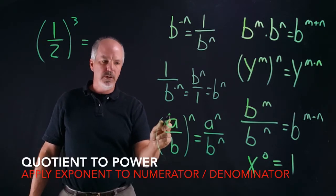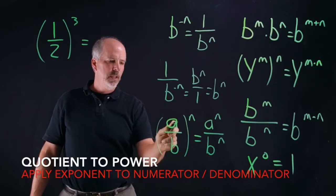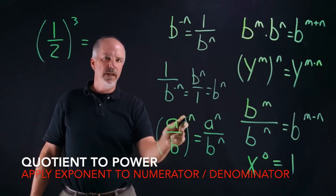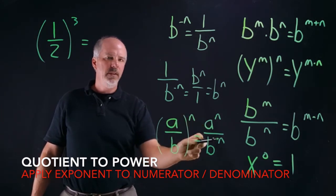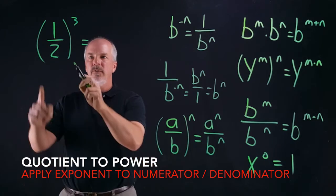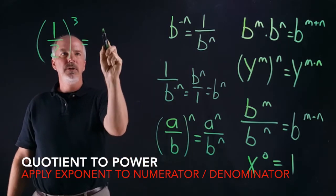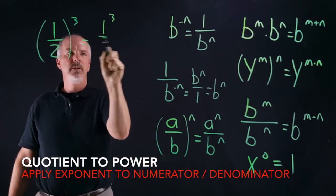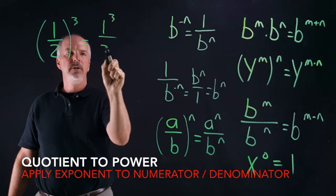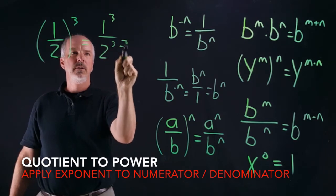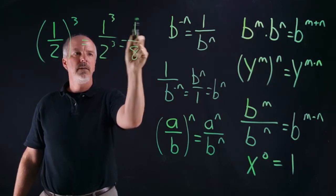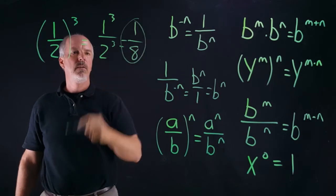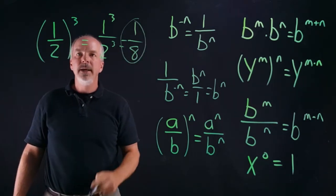Lastly, the quotient rule: a over b to the nth power is equal to a to the n over b to the n. So if we have one half to the third, it's going to equal one to the third over two to the third, which equals one over eight.